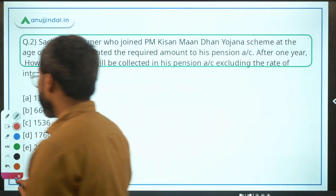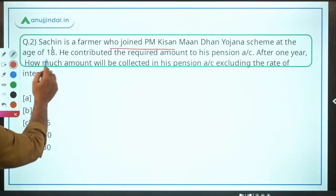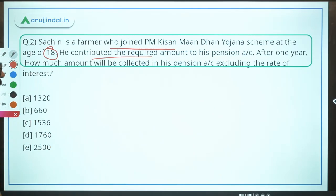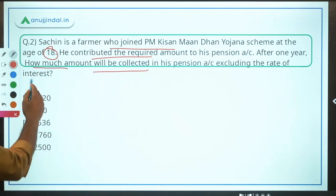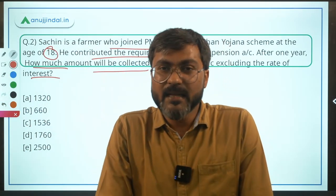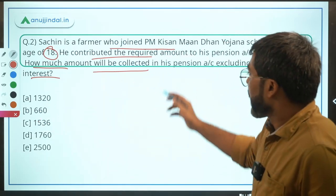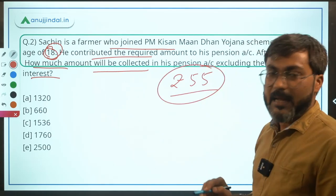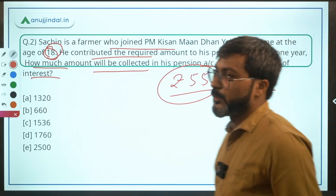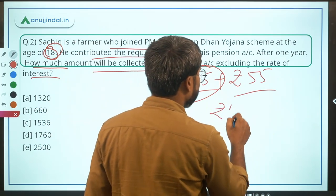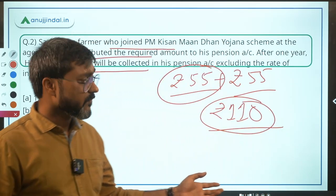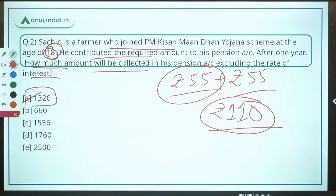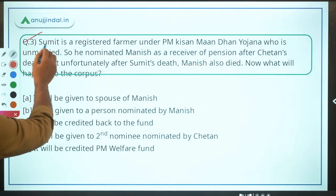Question 2: Sachin joined PM Kisan Mandan Yojana at age 18 and contributed the required amount. After one year, how much will be in his pension account (excluding interest)? At entry age 18, Sachin contributes Rs. 55 per month, and the government also contributes Rs. 55 as matching contribution — total Rs. 110 per month. After one year: 110 × 12 = Rs. 1320. Answer: Option A, Rs. 1320.